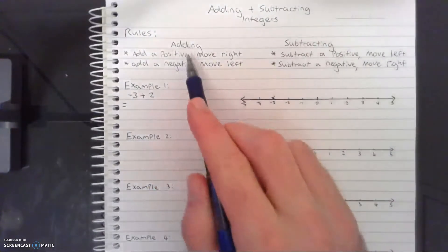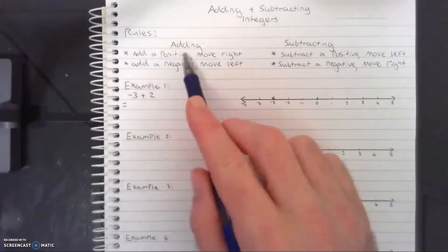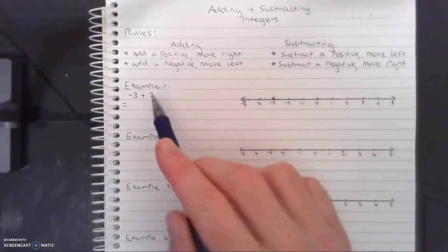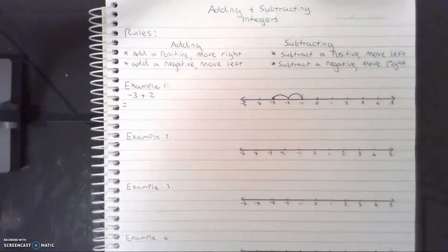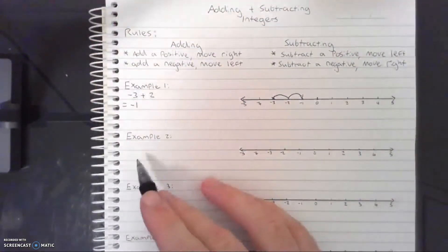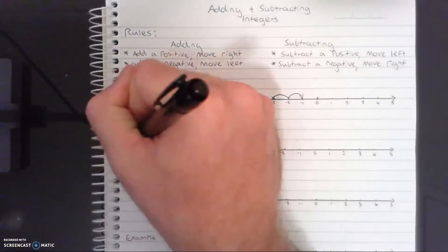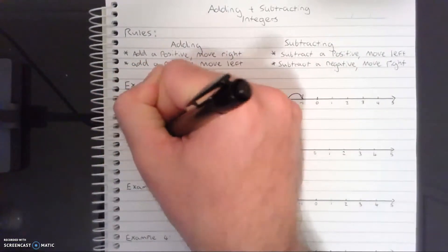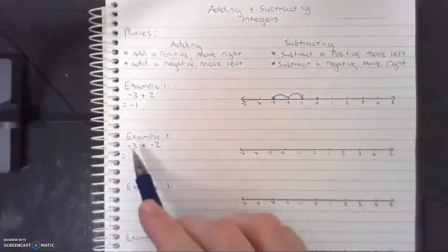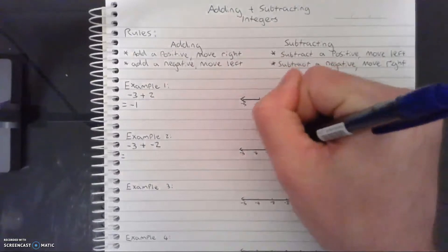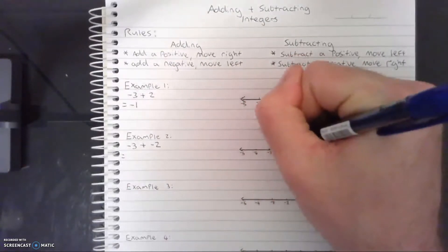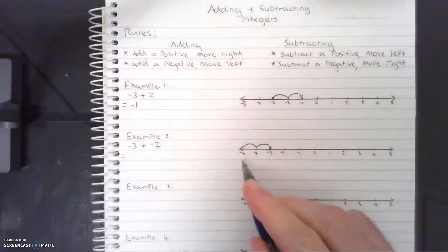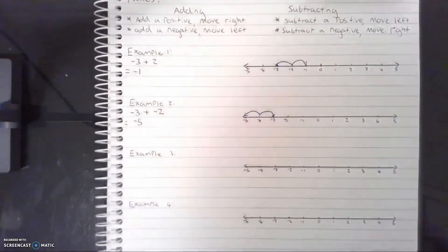Let's do our first example: negative 3 plus positive 2. We'll go to our number line and put in where our original starting number is, which is negative 3 — I'll put a little x right here. We are adding a positive, so we move right two places: 1, 2 — which gives us negative 1. So the answer is negative 1.